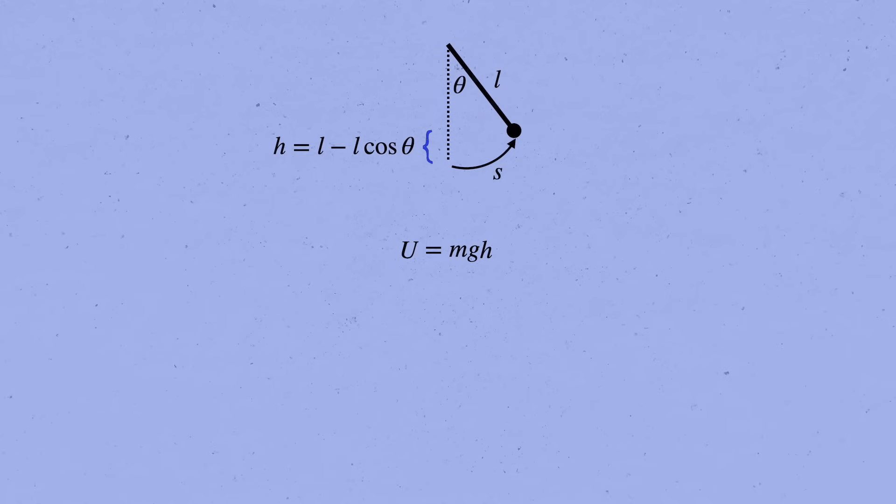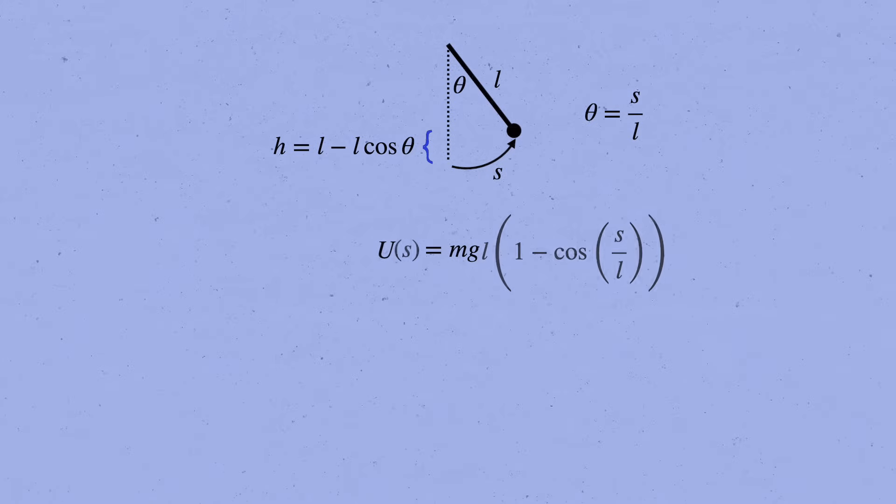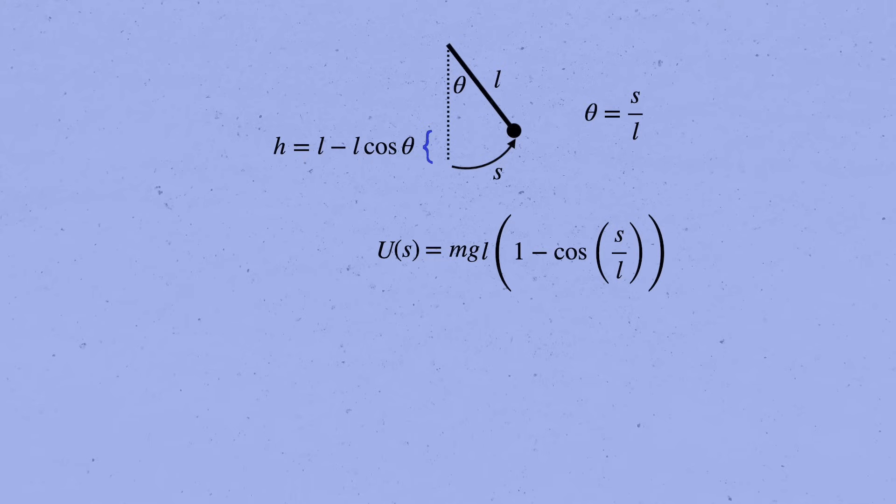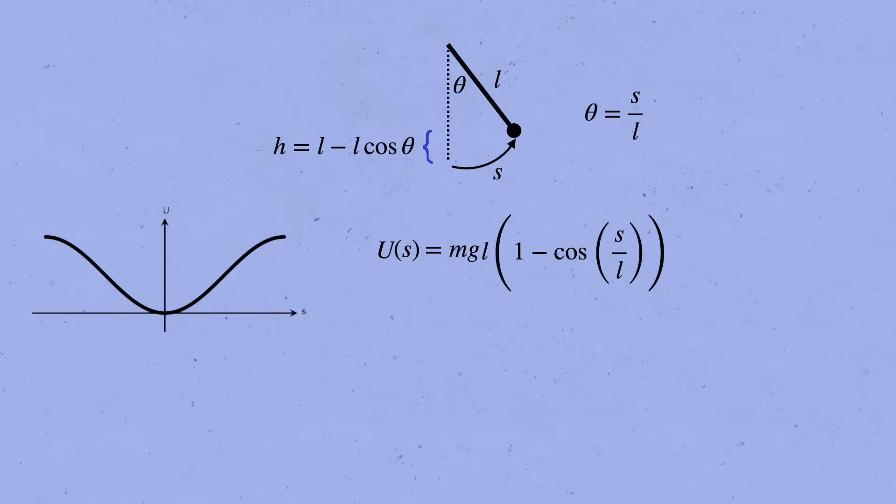And so its potential energy is u equals mgh. Write s for the arc length coordinate that the particle traces out, so that theta equals s over l. Then we can write the potential energy as u of s equals mgl times one minus cosine of s over l. Here's what it looks like. The stable equilibrium point is of course in the middle, at s equals zero, where the pendulum hangs straight down at rest.